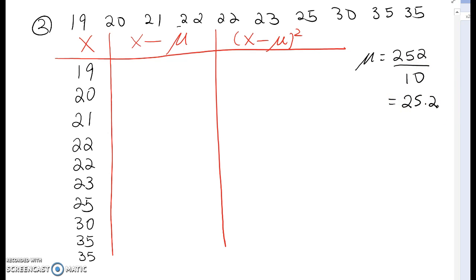Okay. So, the second column, the first entry, x minus mu, that will be 19 minus 25.2. Good. 19 minus 25.2, which is negative 6.2. Please pause this video for a second and then complete all the calculation and restart this video and check your data, please.